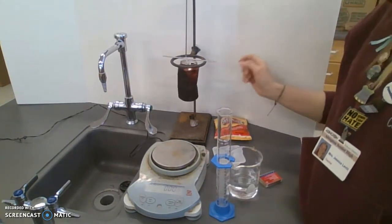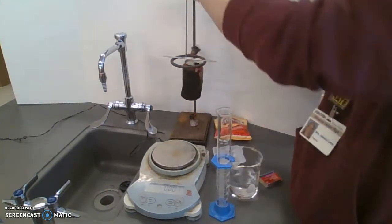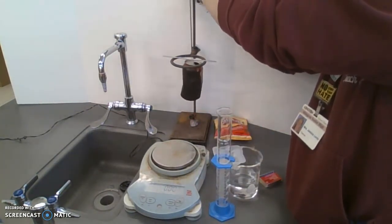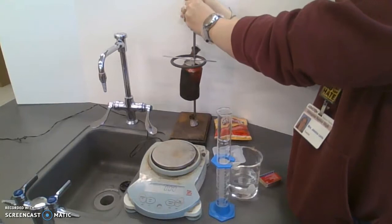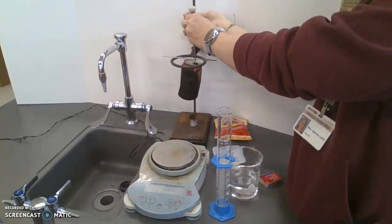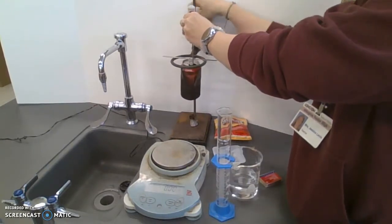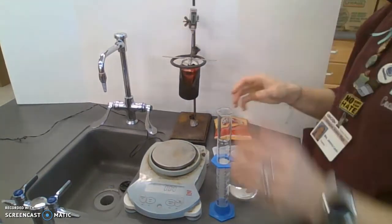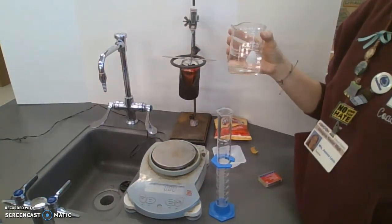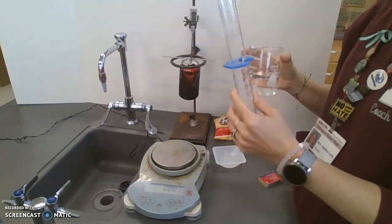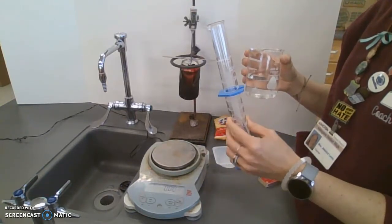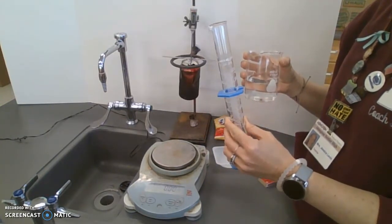So we are going to use a soda can. Up here we have a thermometer that we're going to put inside the soda can like so that will tell us the temperature of the water inside. We have some water and a graduated cylinder so that we can end up measuring how much that's going to be.